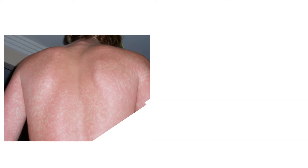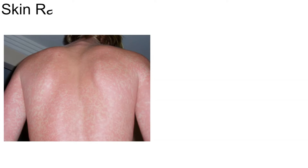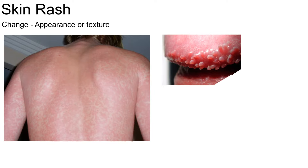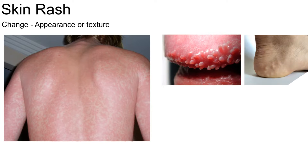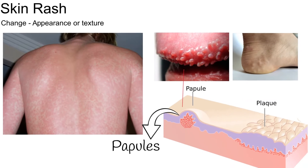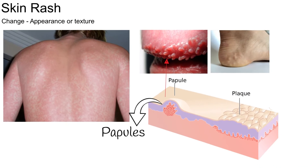Skin rash means changing human skin appearance and or texture. Different diseases cause different types of skin lesions, and the first critical step is to determine what kind of lesion is presented. We will discuss the most common types of rash.